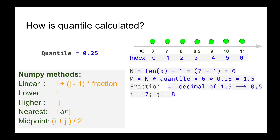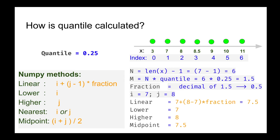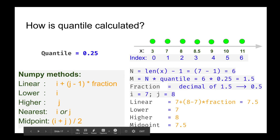To find i and j, we look at m = 1.5, which falls between indices 1 and 2. The value at index 1 is 7, so i = 7, and at index 2 is 8, so j = 8. Substituting these values: for linear we get 7.5, for lower we get 7, for higher we get 8, and for midpoint we get 7.5. Those are the different values each method produces.